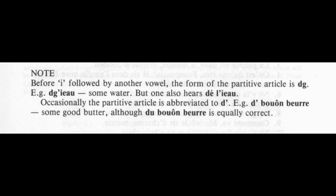Occasionally, the partitive article is abbreviated to 'd.' For example: 'd bon beurre' — some good butter — although 'du bon beurre' is equally correct.